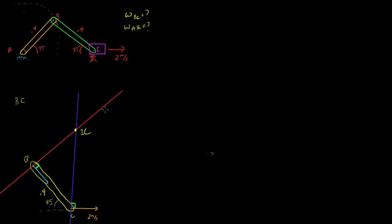There are two distances we're interested in. The first is from B to the instantaneous center — we'll call this R of B with respect to the instantaneous center. The second is R of C with respect to the instantaneous center. To figure out these lengths, we need a little geometry and trig. We need to figure out what the angles inside this triangle are. This angle is 45 degrees and this angle is 90 degrees.